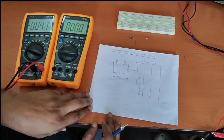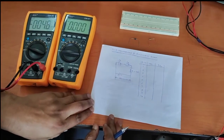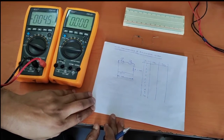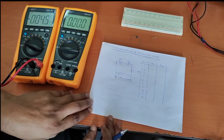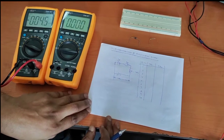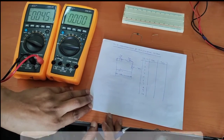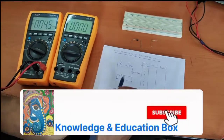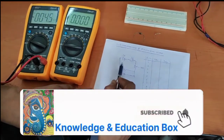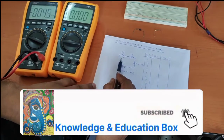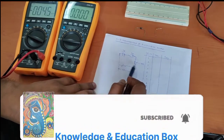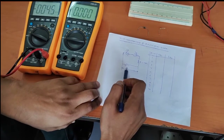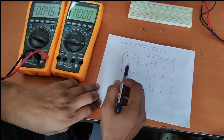Today we are going to perform the V-I characteristics of p-n junction diodes — a study of p-n junction characteristics. For this we have drawn a circuit diagram. This is the diode, this is a resistor, and this is the DC voltage power supply.